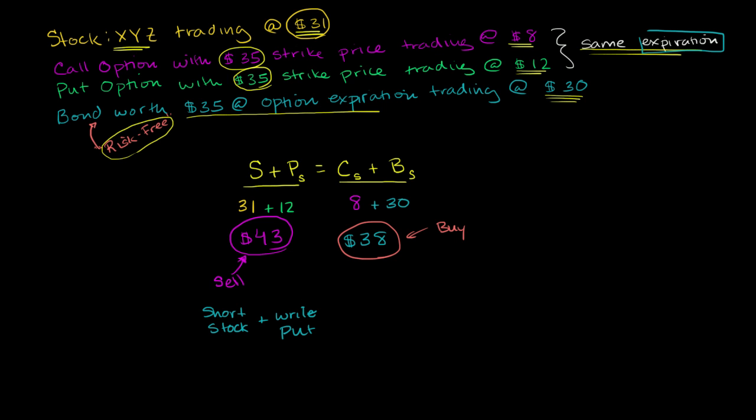And what would happen there? Shorting the stock means you're borrowing the stock and selling it, so you get $31. Writing the put means you're creating a put option and selling it to someone else, so you get $12 for that. You get $43 total.